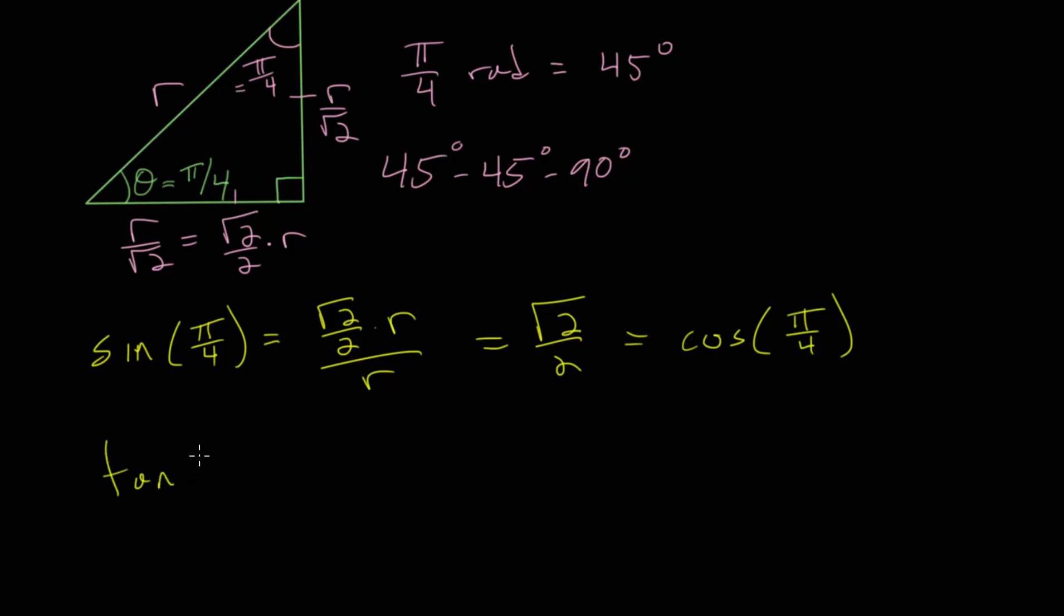And when we look at the tangent of pi over 4, it is the opposite divided by the adjacent. We have something divided by itself, and so everything will cancel out, and this will be equal to 1. So the tangent of pi over 4 is 1, and the sine and cosine of pi over 4 is the square root of 2 over 2.